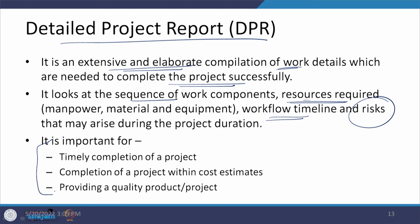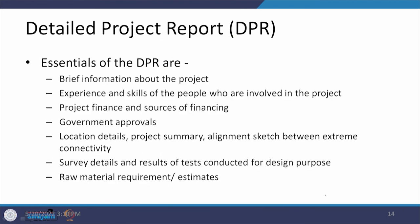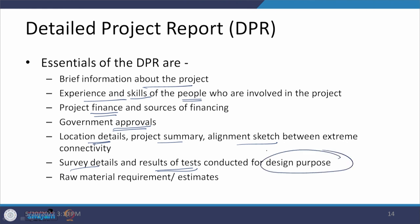This document helps you complete the work on time, within cost estimates, and with good quality. The essentials include information about the project, the experience and skills of the people involved, project financing and its sources, approvals required from government, location details, a summary, a sketch of the alignment, various hydrological, soil, and geological survey results, test results, design direction, raw materials required, their estimates, and their specifications with respect to MORTH guidelines and Indian Roads Congress guidelines.